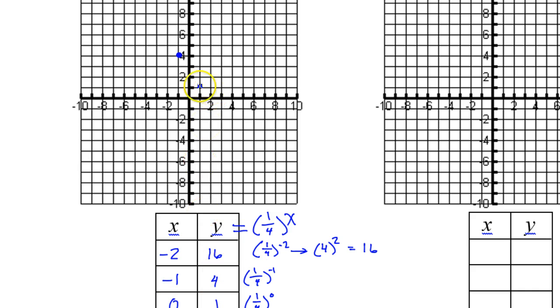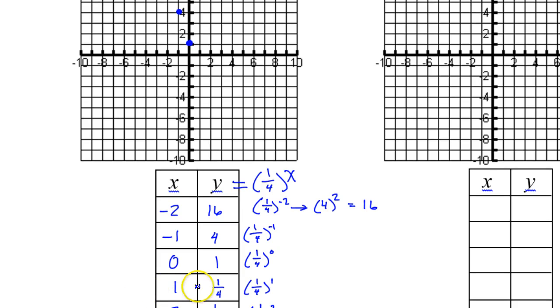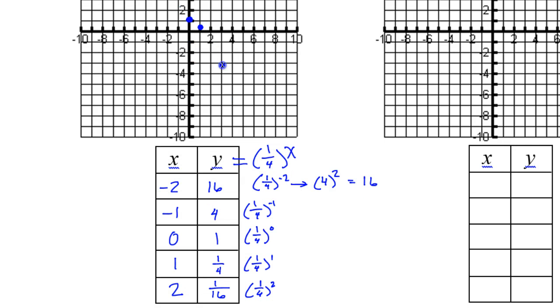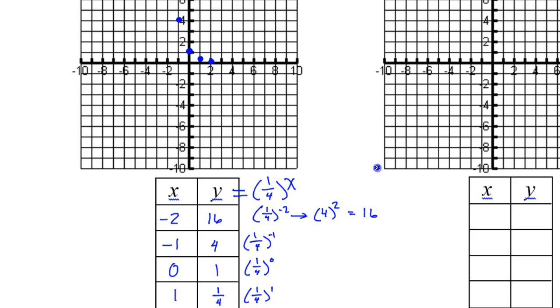0, 1 is right there. And then we've got 1, one-fourth, which is already very small. By the time we get to 2, we're at 1 sixteenth. One sixteenth is so small that it's really going to appear to be on the x-axis, but just one sixteenth up.